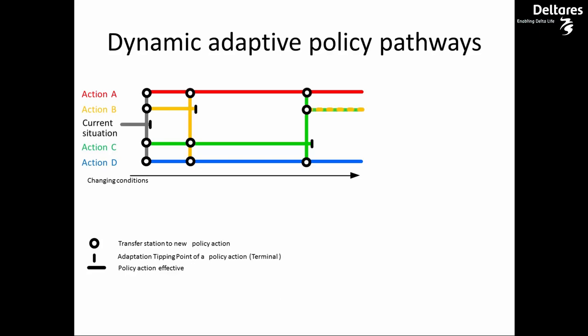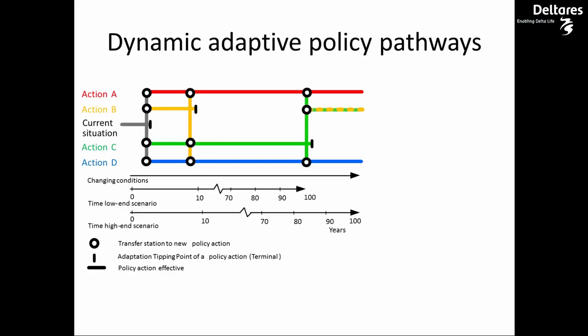These sequences of actions over time are what we refer to as pathways. The future is deeply uncertain — the timing of changing conditions like sea level rise is unknown. In the DAP approach, this means transitions between actions may be needed sooner or later, depending on how the future unfolds. But the pathways themselves remain unchanged, making DAP a robust planning method under deep uncertainty.